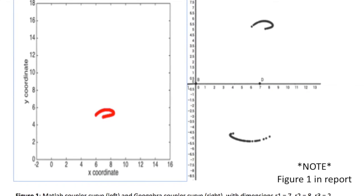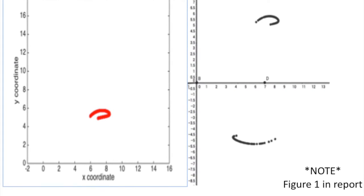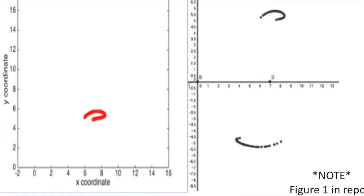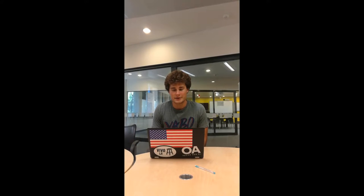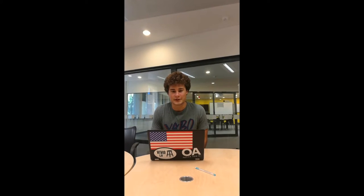Two examples highlight different realizations we came to throughout the process. One was shown in Figure 4 of our report, where the GeoGebra curve and our curve in testing were the same but inverted. This led to a deeper understanding of the way that GeoGebra handles the different assembly linkages — we realized that simply inverting our plot gives the exact same result as GeoGebra.